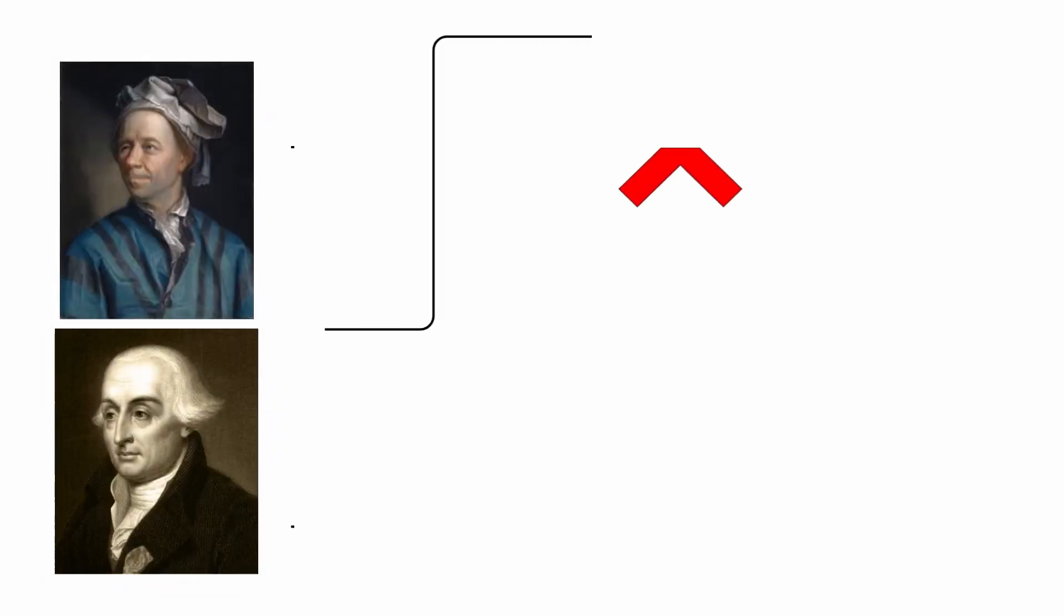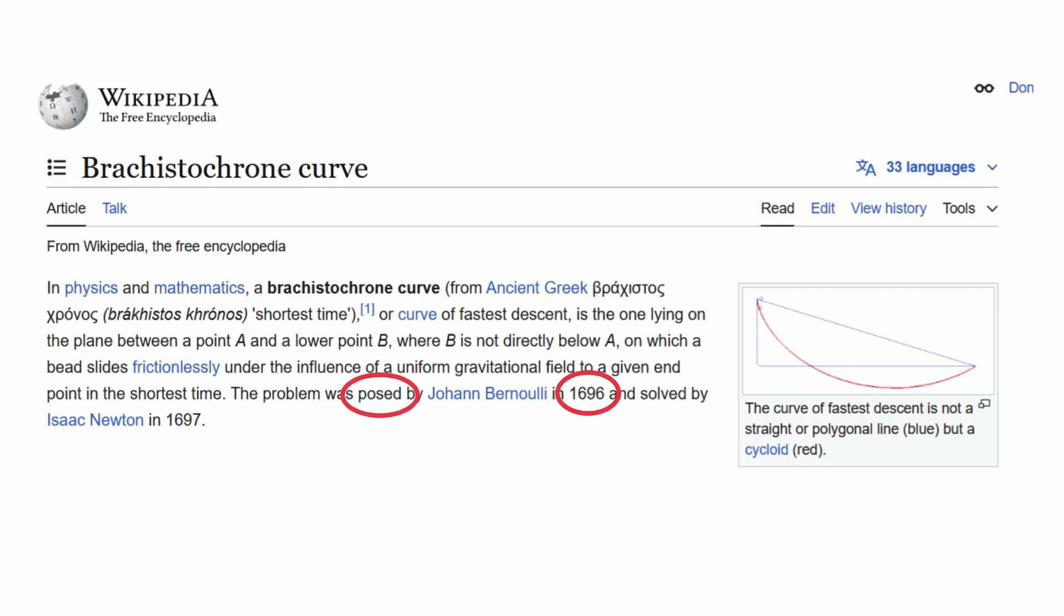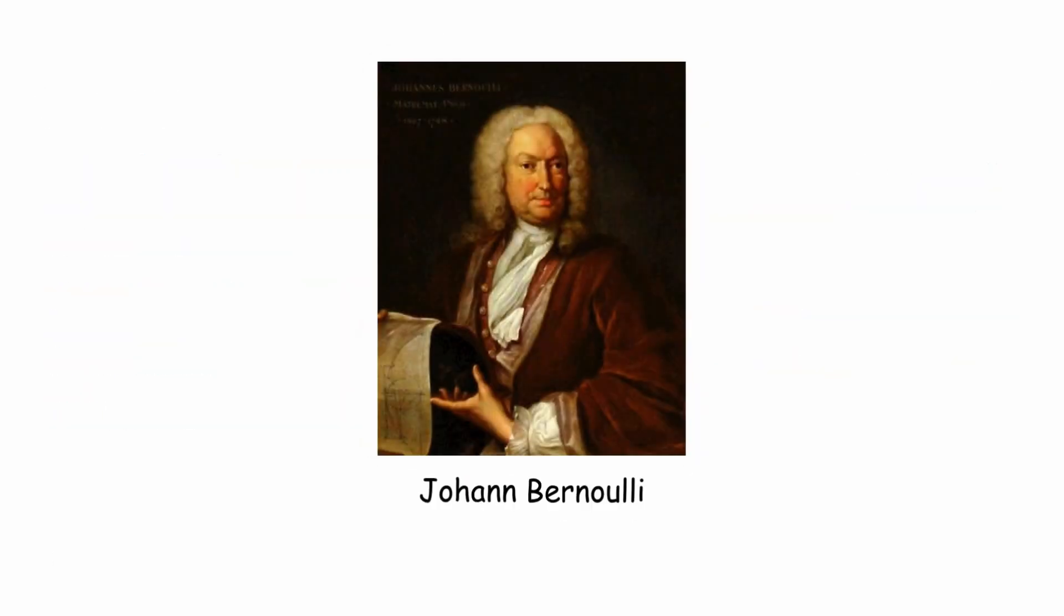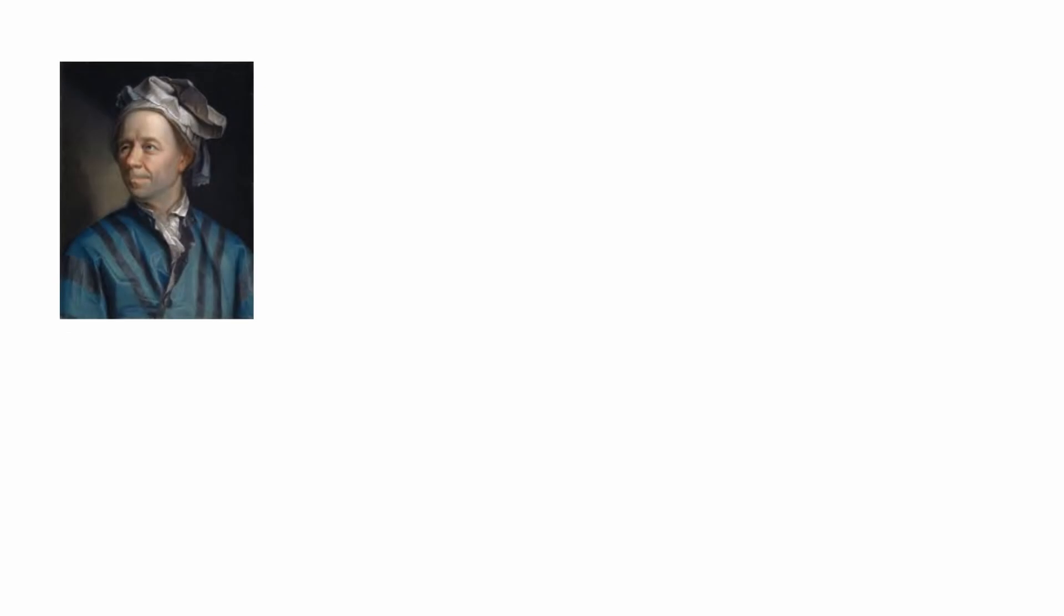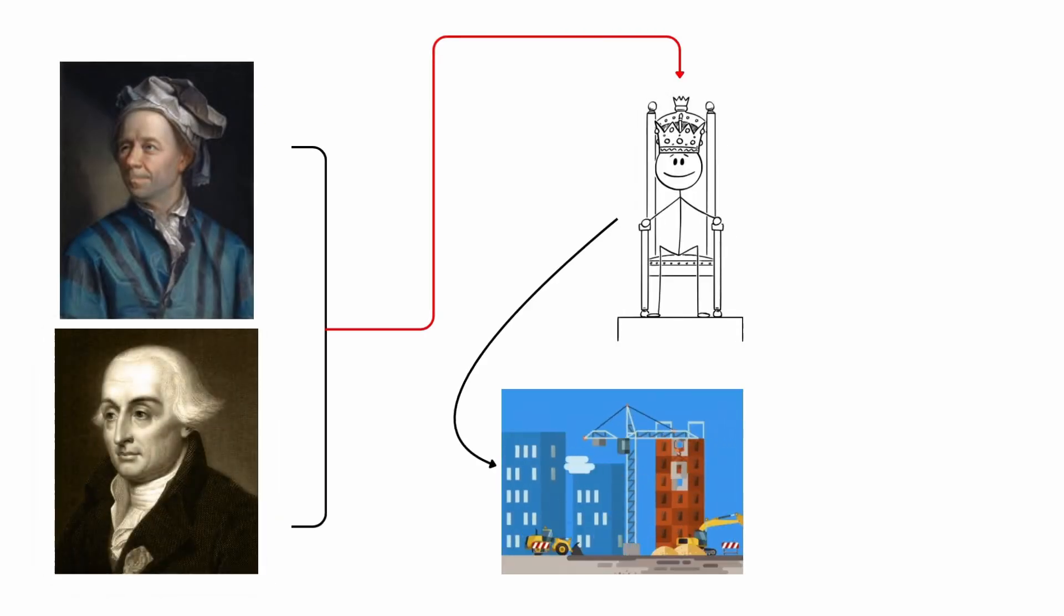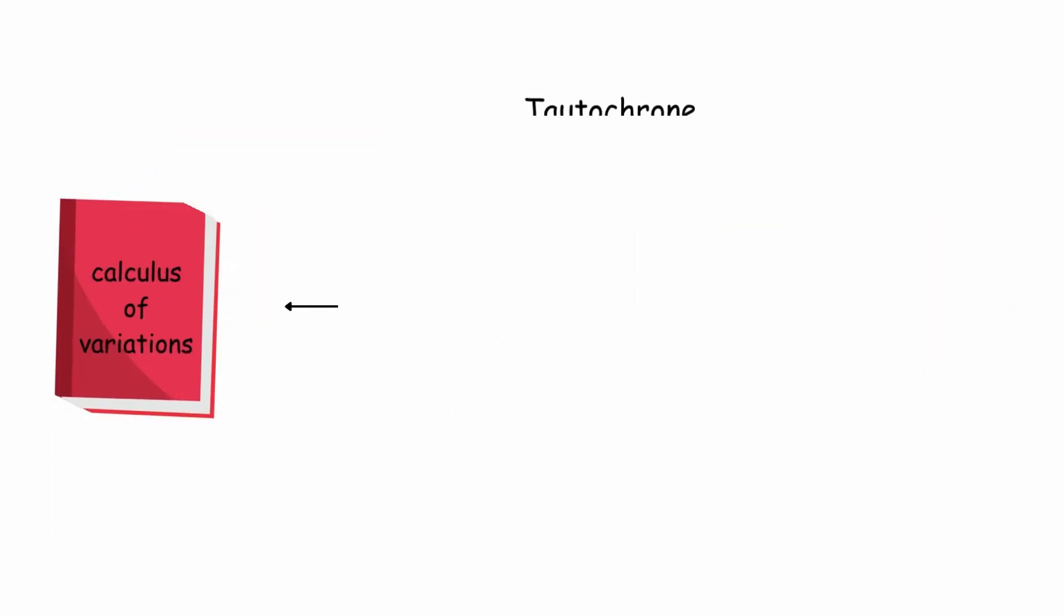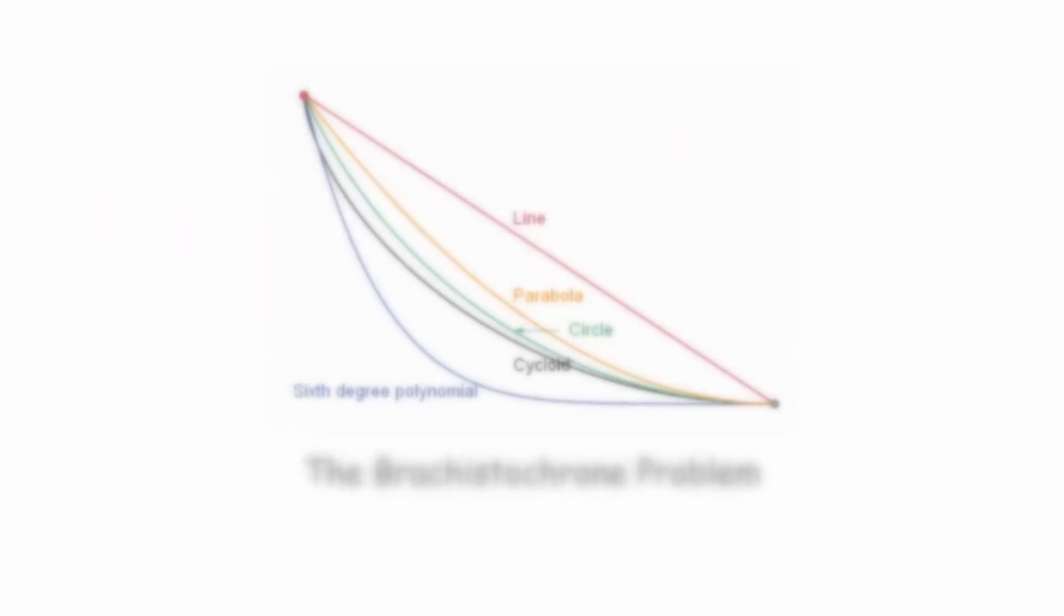Euler and Lagrange were not directly involved in the original solution to the Brachistochrone problem, as this had been posed in 1696 by Johann Bernoulli. However, Leonard Euler and Joseph-Louis Lagrange were key figures in the subsequent development of the calculus of variations, which became a central tool for addressing similar problems, such as the Brachistochrone.